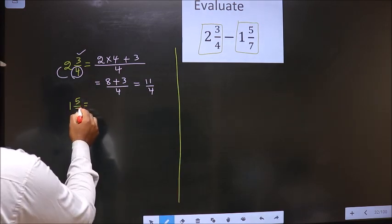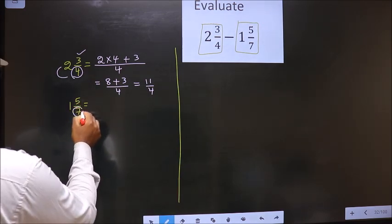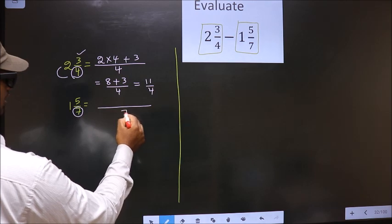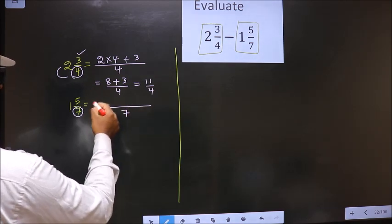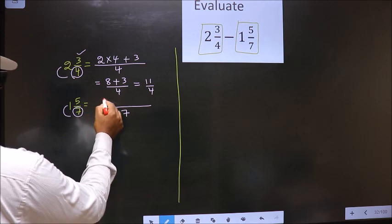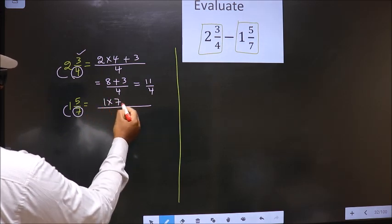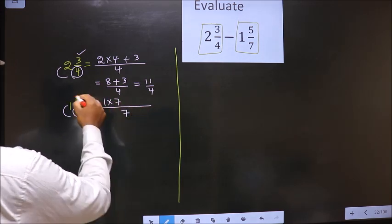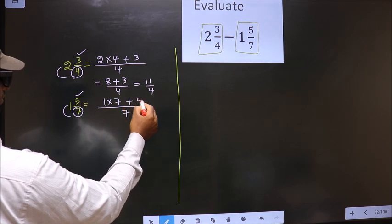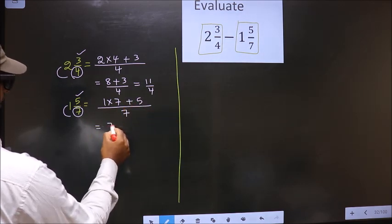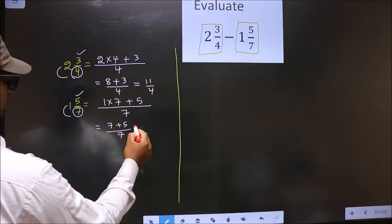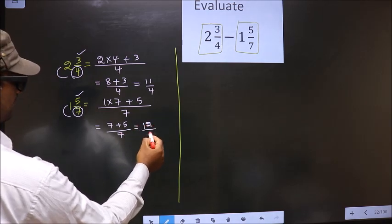Now, here the denominator is 7, so you also write 7 in the denominator. In the numerator, we should multiply these two numbers — that is 1 into 7 — and also add this number, that is plus 5. So, 1 into 7 is 7, plus 5 by 7, that is 12 by 7.